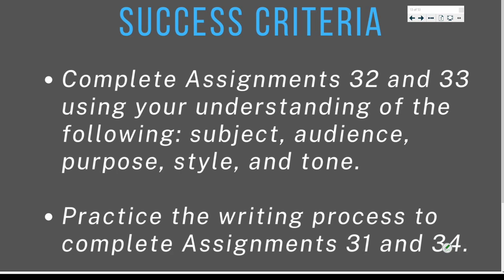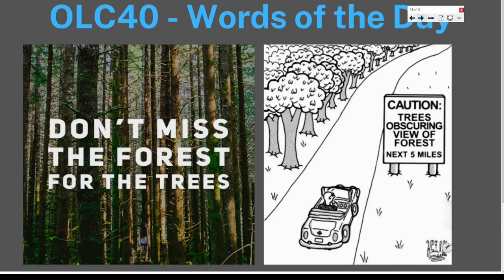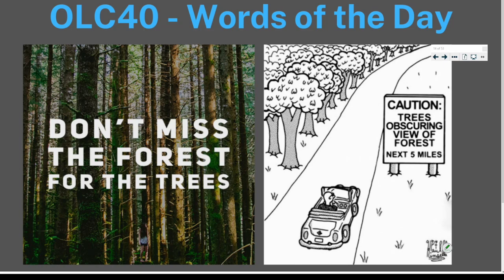Your success criteria for today's class is to complete assignments 32 and 33 using your understanding of subject, audience, purpose, style, and tone. And to practice the writing process to complete assignments 31 and 34. Assignments 31 and 34 are journal entries, so we can practice the writing process to get those done. Assignments 32 and 33 are more specific exercises asking you to look at specific kinds of writing and test your understanding of who wrote these documents, why they wrote them, and how they wrote them.